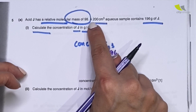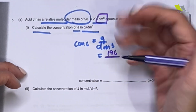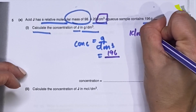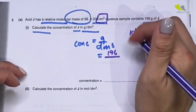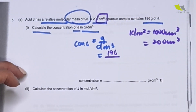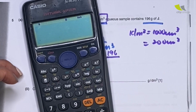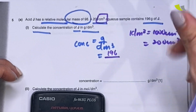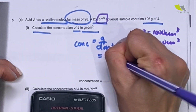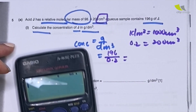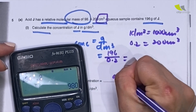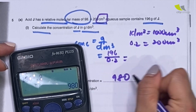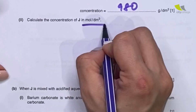They say 200 cm³ — this is a common trap, but it's very simple. One dm³ equals 1000 cm³, and this is 200 cm³, so simple mathematics: divide and multiply, and you get 0.2 dm³. Write down 0.2. Then punch it into the calculator: 196 divided by 0.2 gives 980 gram per dm³.